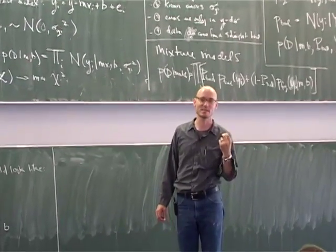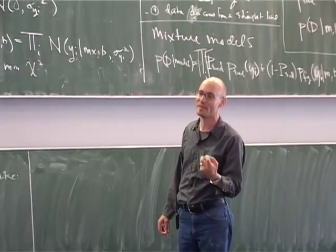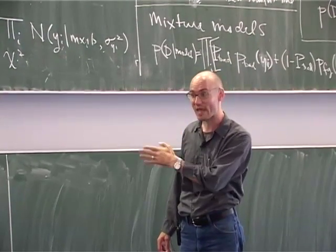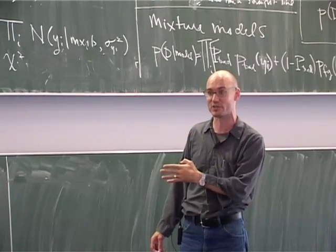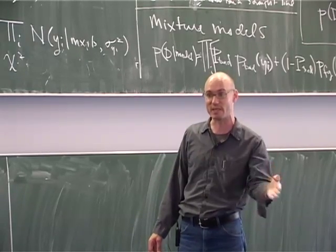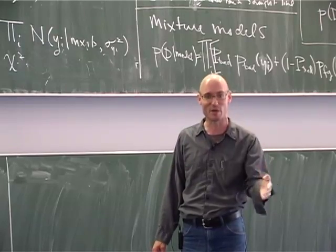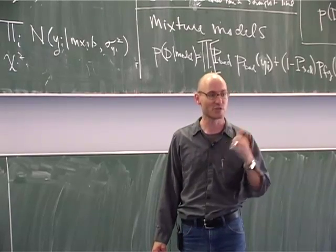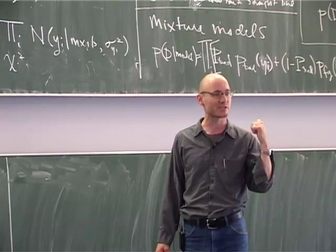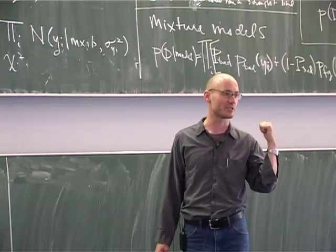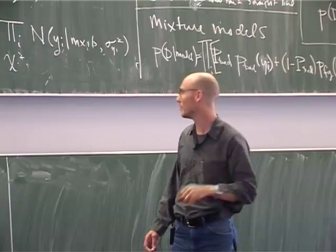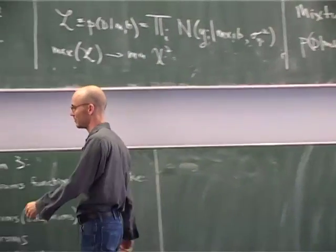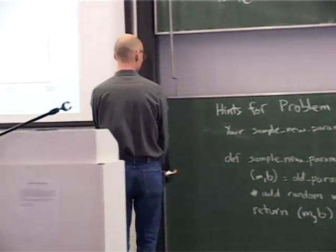But the beautiful thing about MCMC is it does that marginalization for me. The distribution of M values in my Markov chain is the marginalized distribution of M values. The distribution of B values in my Markov chain is the marginalized distribution of B values. So this MCMC will not just optimize this five-dimensional likelihood, it will marginalize over it. Okay, so marginalization is a key issue.